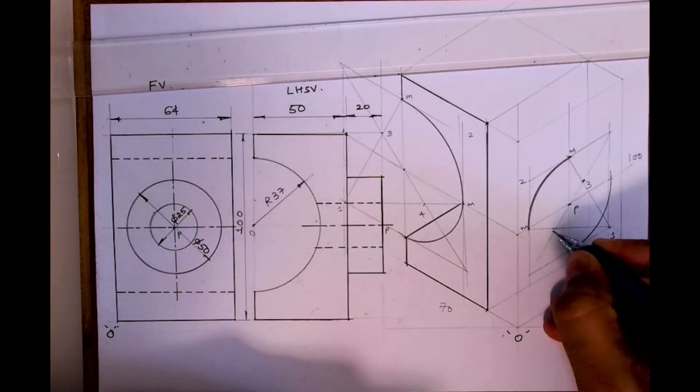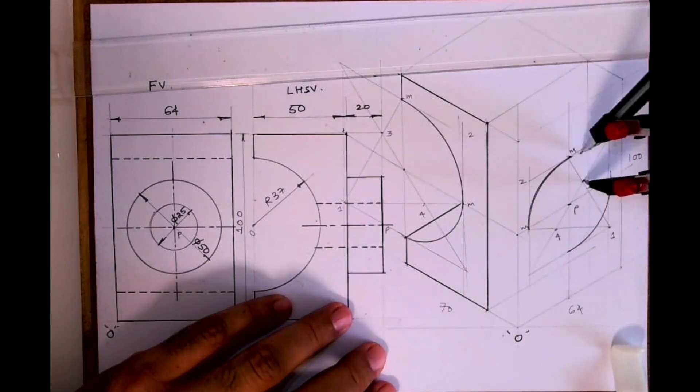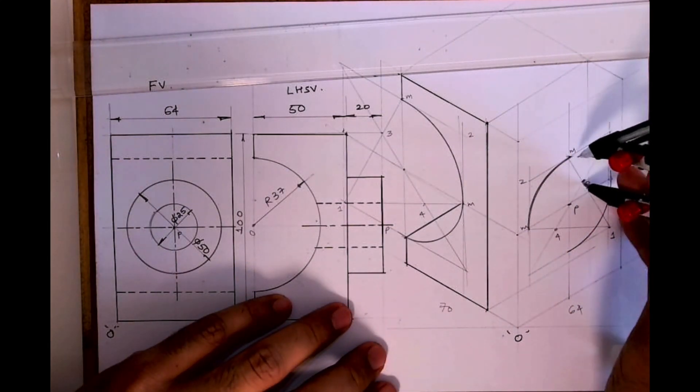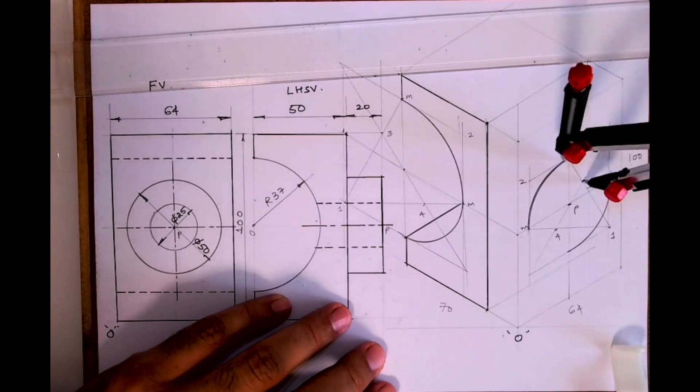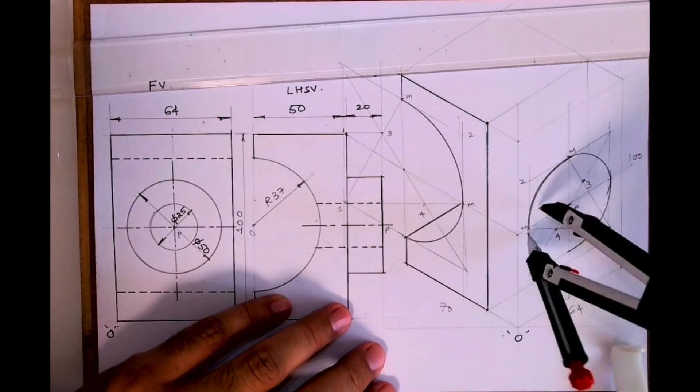And this is point three, this is point four. From point three to M, see this, three to M, draw arc. Four to M.